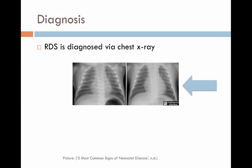Respiratory distress syndrome is diagnosed by a chest X-ray. Characteristics of RDS are portions of the air-filled tracheobronchial tree outlined by a uniform bilateral white opacity — the white is the atelectasis. Diagnosis is based on the symptoms, levels of oxygen in the blood, and abnormal chest X-ray results.